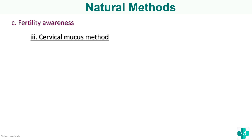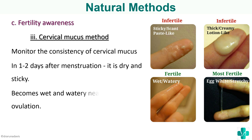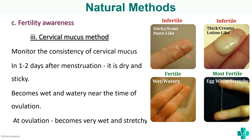The next method is the cervical mucus method, where we monitor the consistency of cervical mucus. In the 1–2 days after menstruation it is dry and sticky; it becomes wet and watery near the time of ovulation; and at ovulation it becomes very wet and stretchy. This is logical because only when the mucus is wet and stretchy can sperm navigate through the vagina, reach the cervix, and travel up through the uterus. In other days the mucus is dry and sticky, making it difficult for sperm to enter.